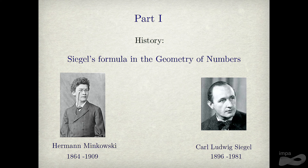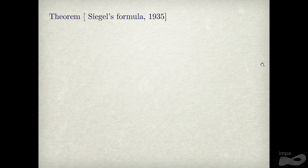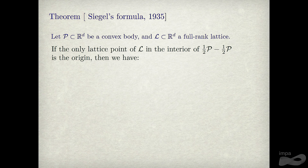The geometry of numbers started with Minkowski around 1895, and many people continued. One of the people was Carl Ludwig Siegel, who pushed it much further, though many things still go back to Minkowski. Siegel's formula is from 1935.